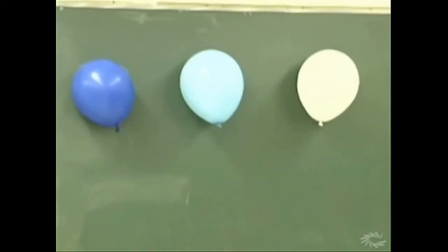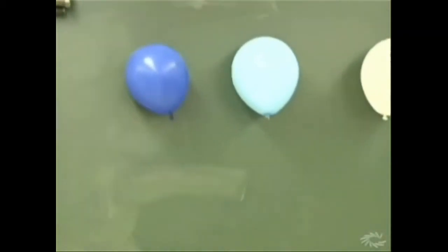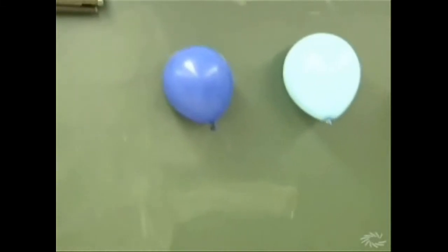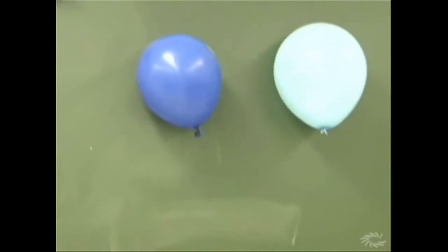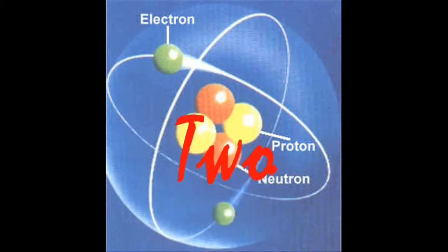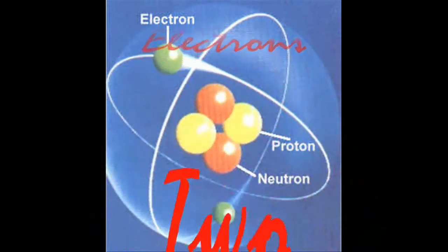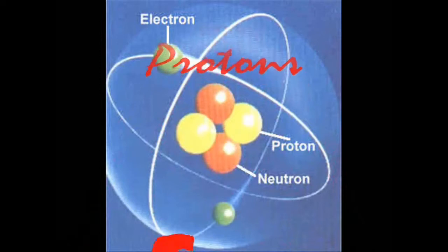We have just learned about static electricity. When you rub two things together, you create friction. Friction will make the electrons move from the carpet to the comb, or from the carpet to the balloon.